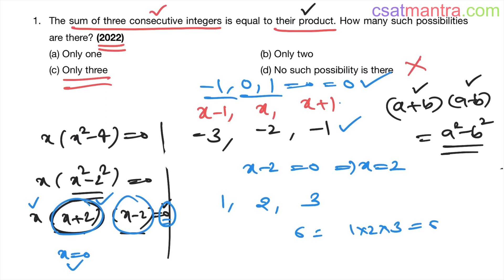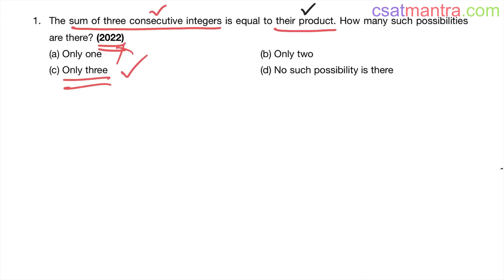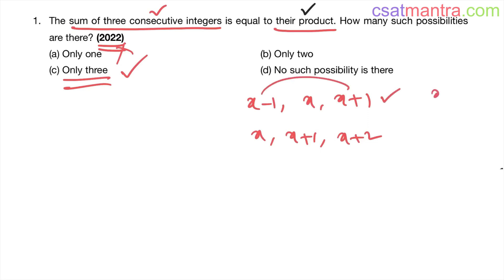The answer is C — 3 possibilities. If you had taken the consecutive integers as x, x+1, x+2 instead, the problem would be bigger with mixed x and x² terms, making things more complicated. By choosing x-1, x, x+1, we got the clean form x²-1, which made things much easier.